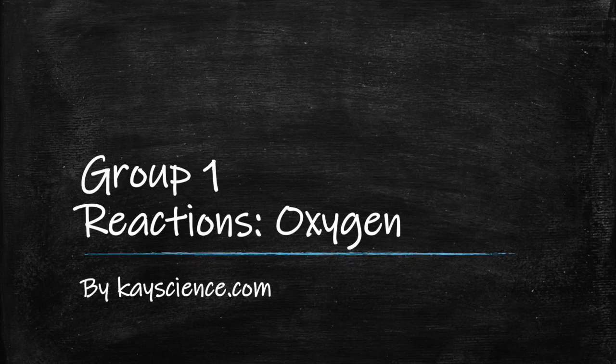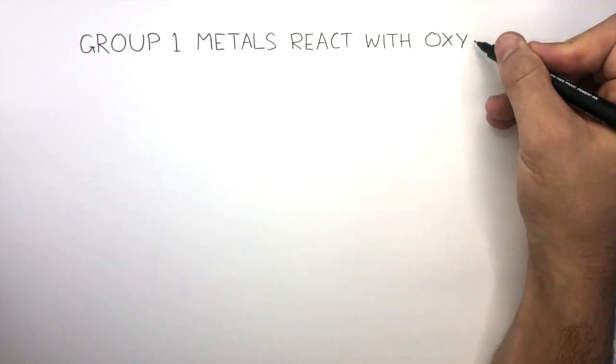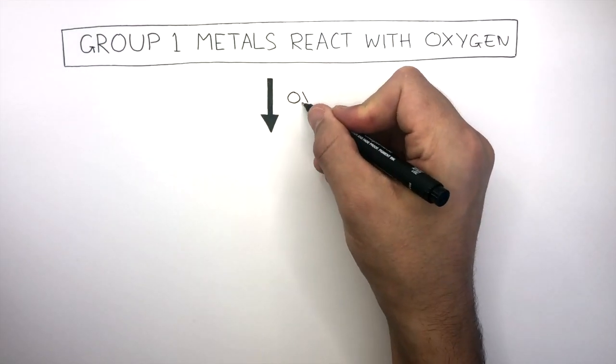Group 1 Reactions with Oxygen by kscience.com. Group 1 metals react with oxygen. This reaction is called oxidation.